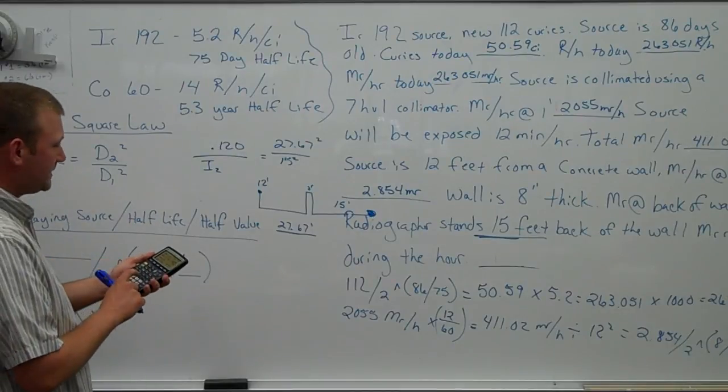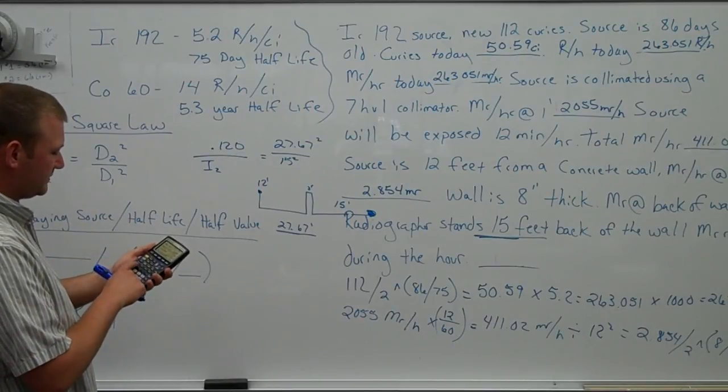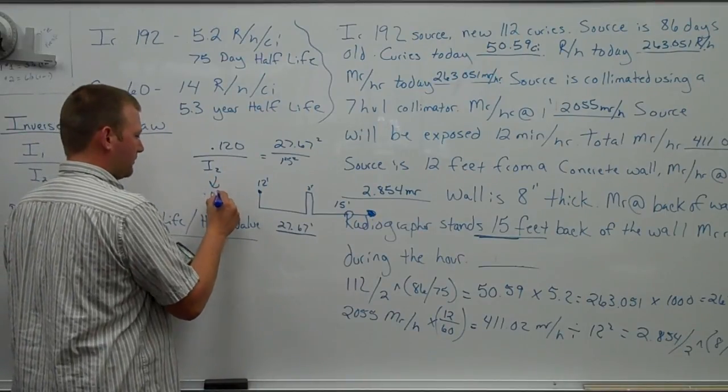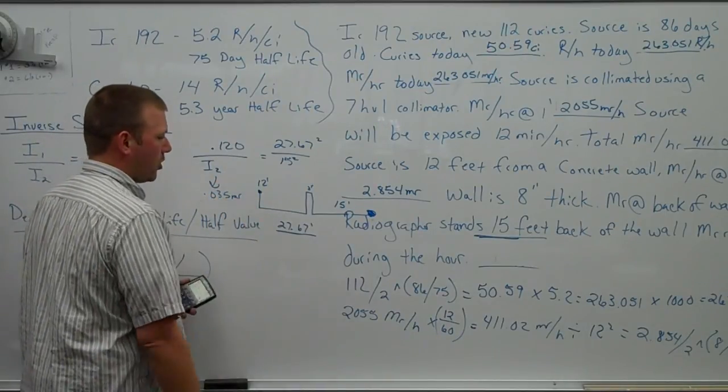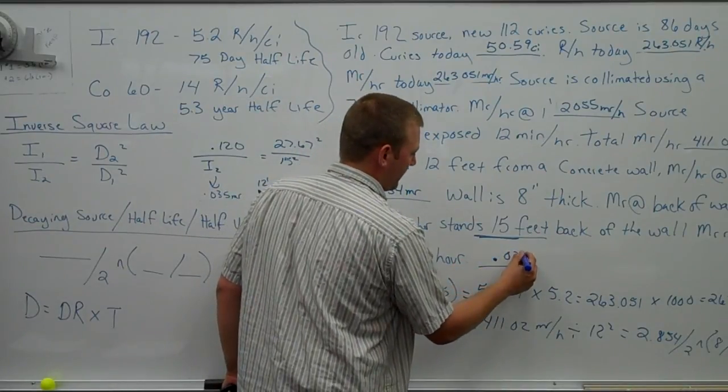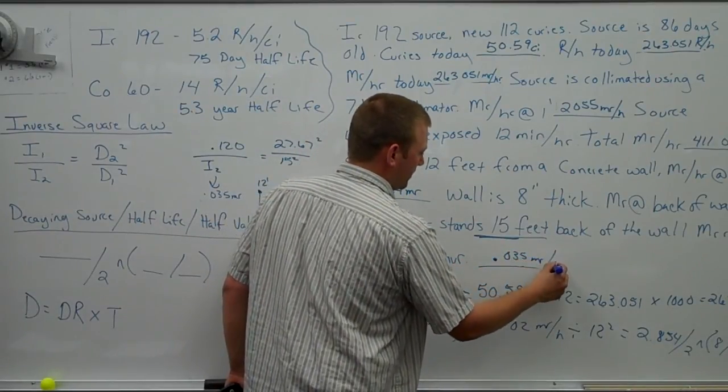.120 times 15 squared still works the exact same way. Divide that by 27.67 squared. I come out with a value of .035 mR per hour. So this guy right here .035 mR per hour.